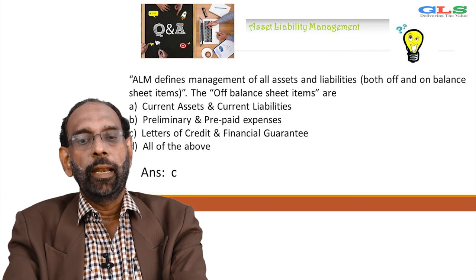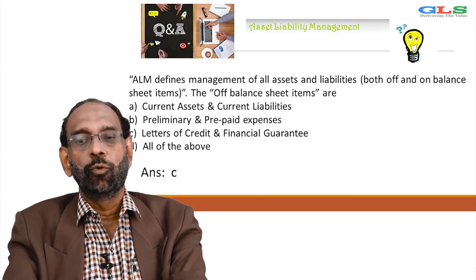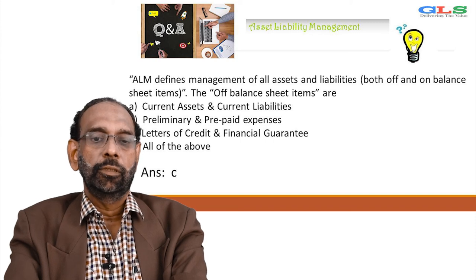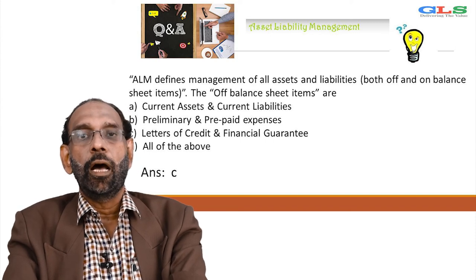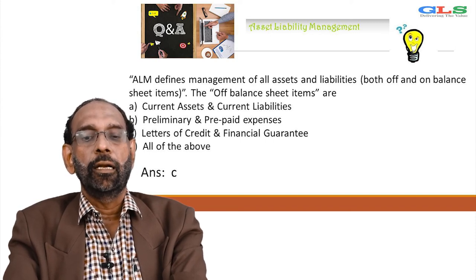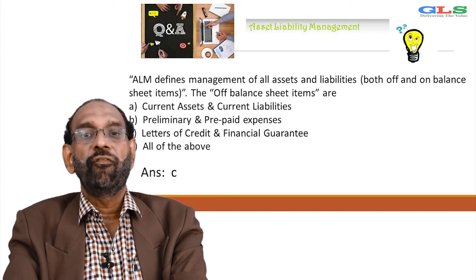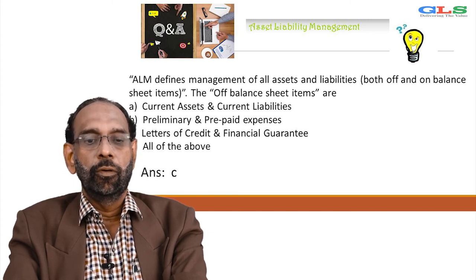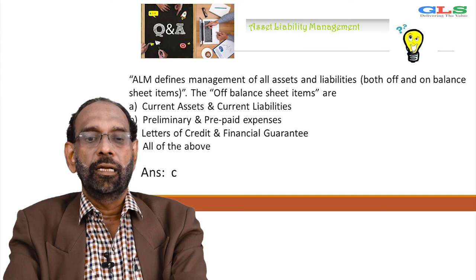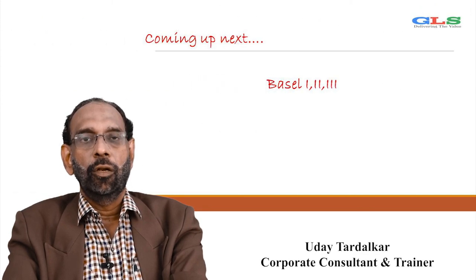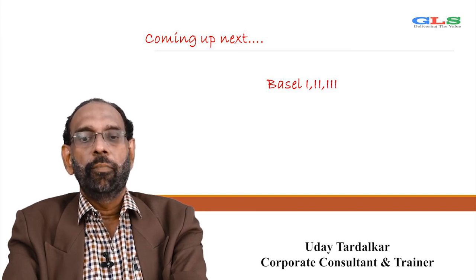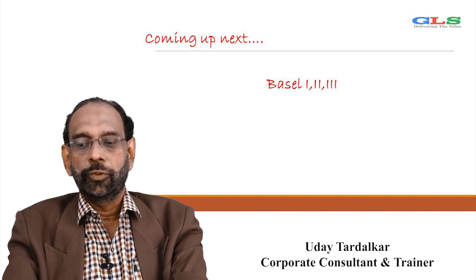ALM defines management of all assets and liabilities — both off and on balance sheet items. The off balance sheet items are — current assets and current liabilities, preliminary and prepaid expenses, letters of credit and financial guarantee, all of the above. The answer is C — letters of credit and financial guarantee. With this we conclude our session on MCQ. In the coming session, we will cover Basel I, II and III norms. Thank you.